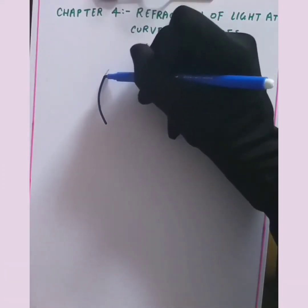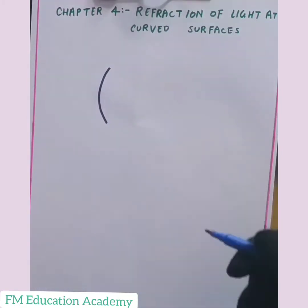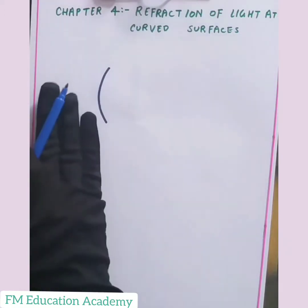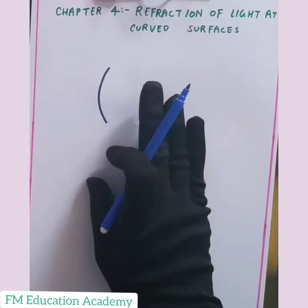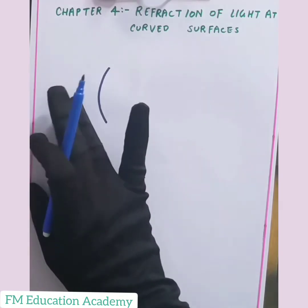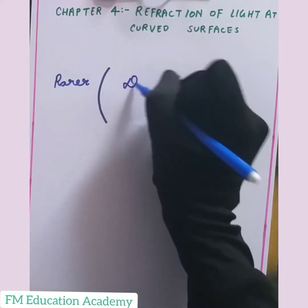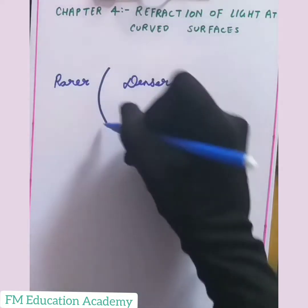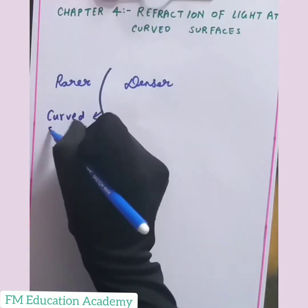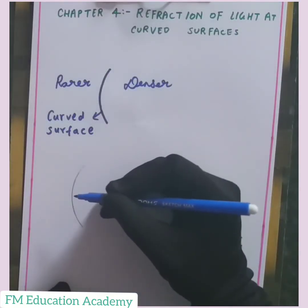In this figure, this is my curved surface. Let us suppose the curved surface is a convex surface. In this convex surface we will have two mediums — on the left hand side we will have one medium and on the right hand side we will have another medium. Let us suppose we are having a rarer medium on the left side and a denser medium on the right side.